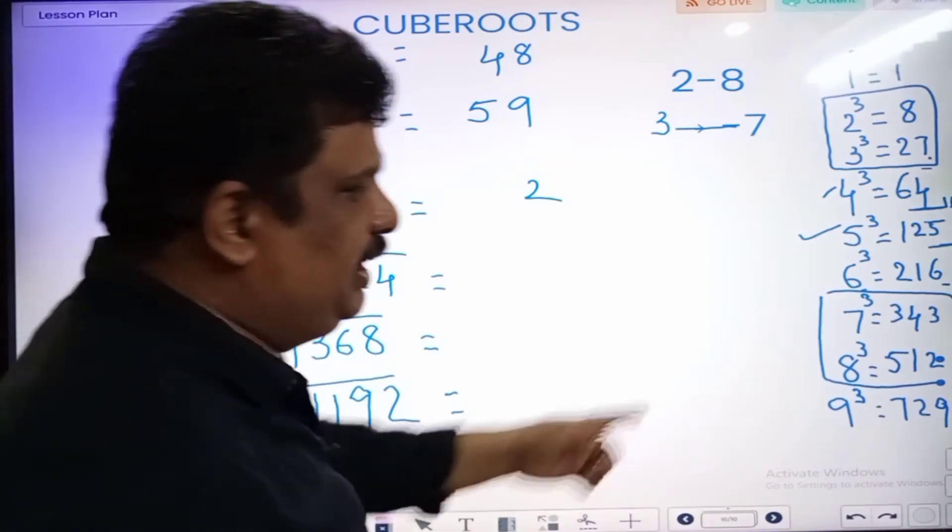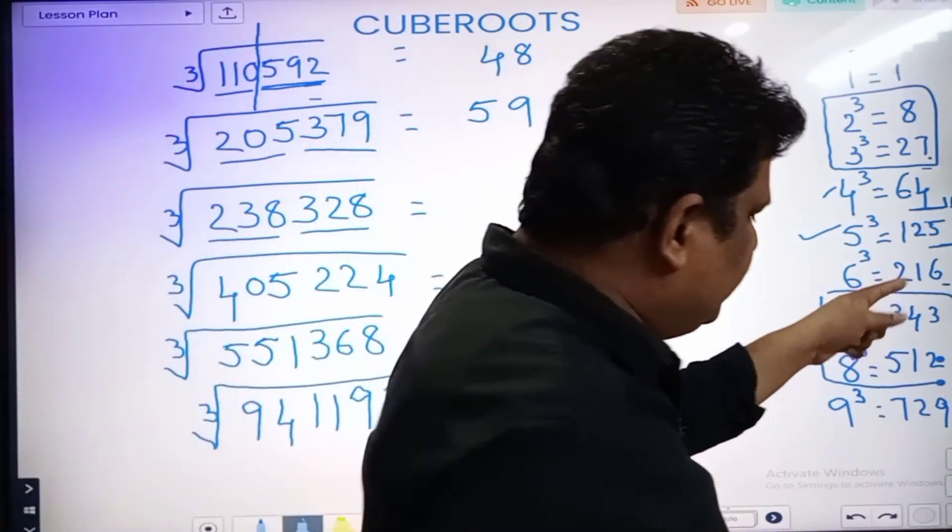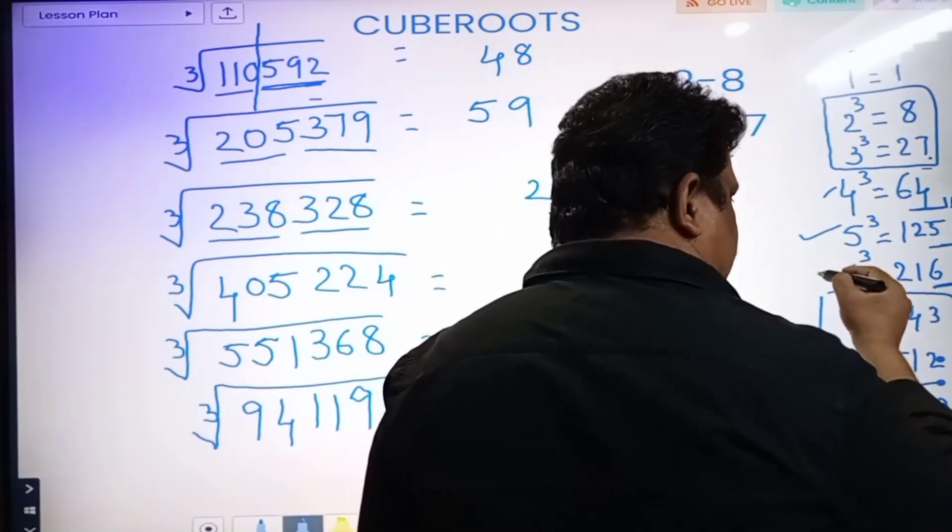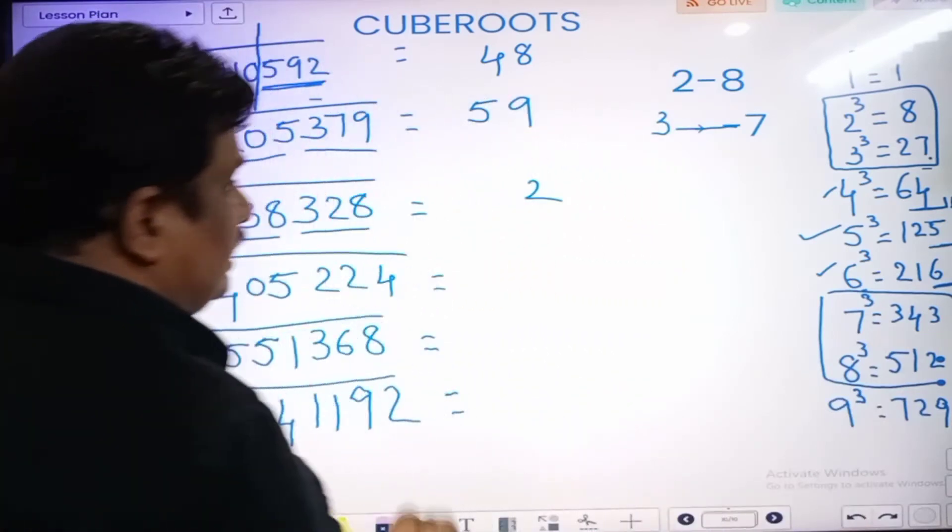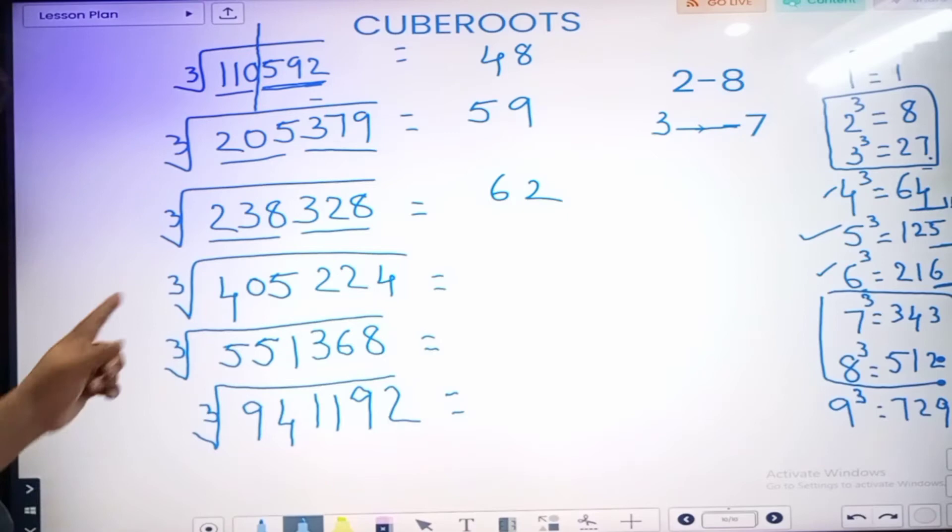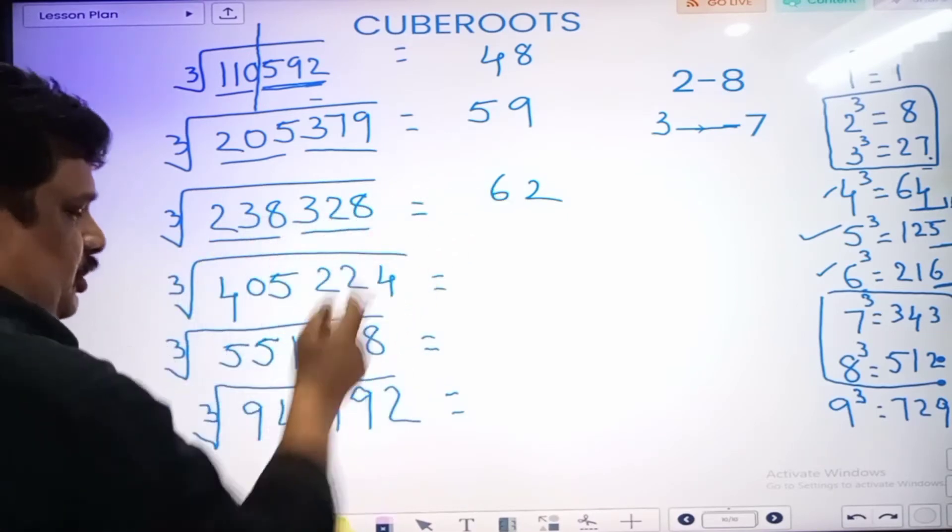238, 216. Between 6 cube and 7 cube. In between. So lesser value, 6. Less value. Above, greater. 42. Next. That is this value: 62.